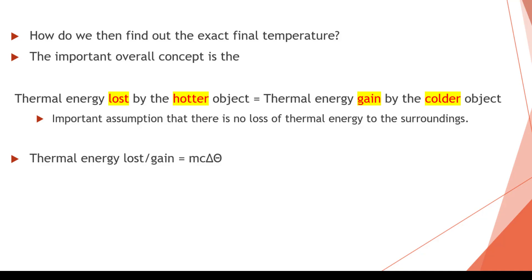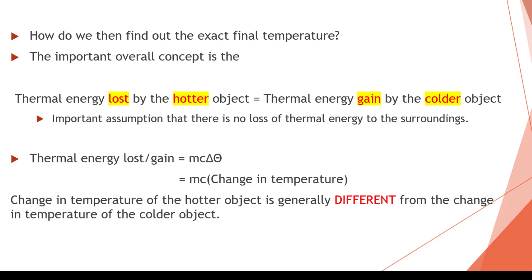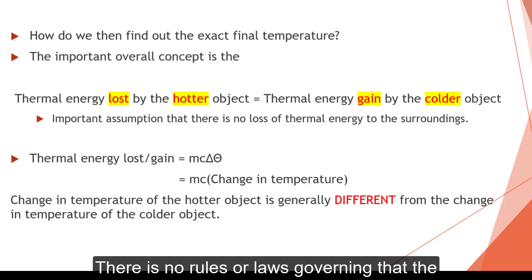And the thermal energy loss or gain can be calculated by our formula Q equals mc theta, or mc change in temperature. The change in temperature of the hotter object is generally different from the change in temperature of the colder object. There is no rule or law governing saying that the change in temperature of both objects must be the same.